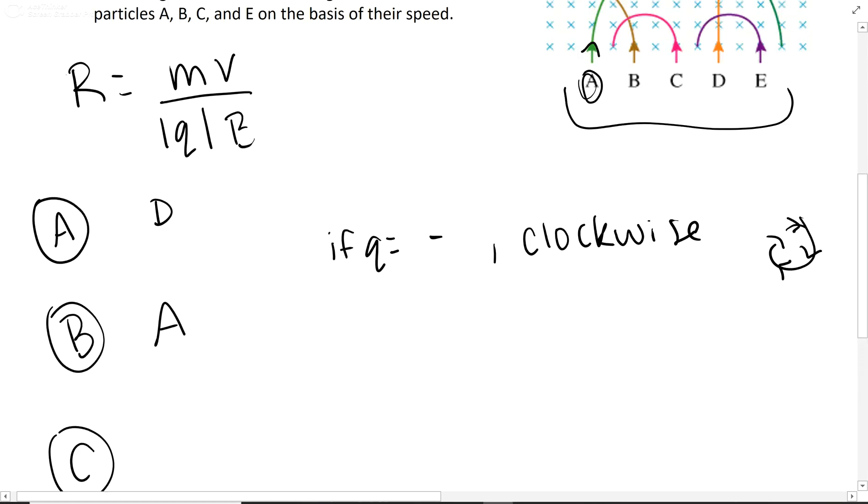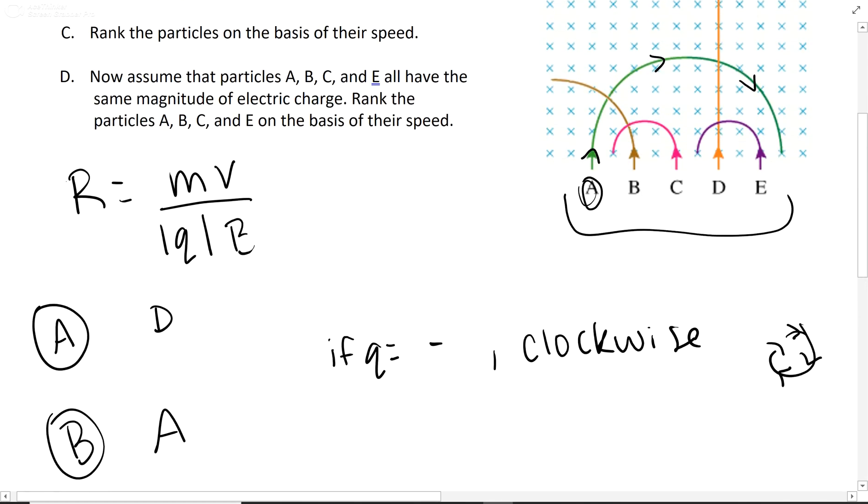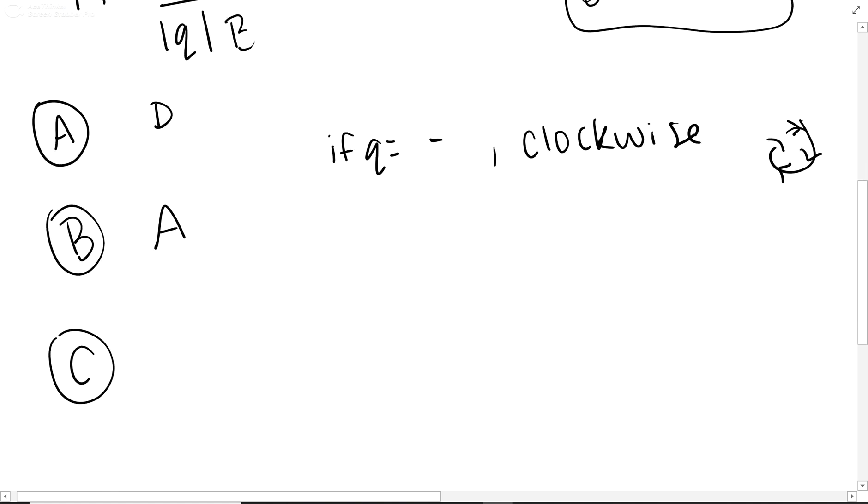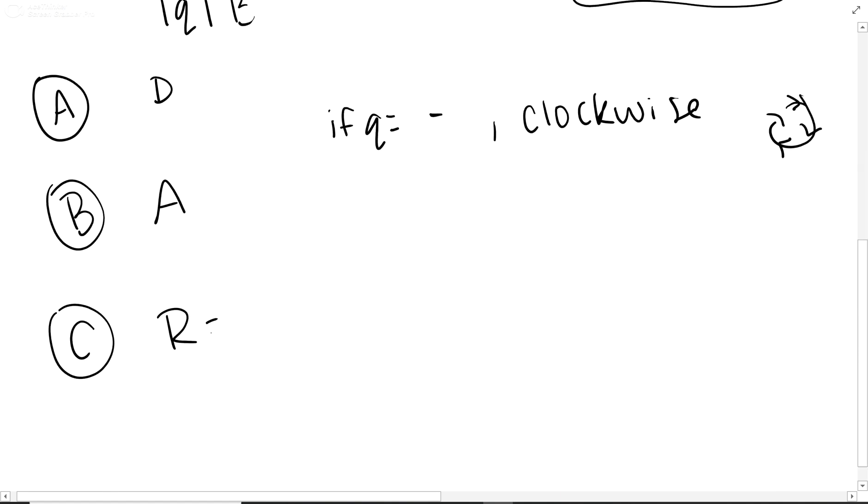Now let's look at C. C is asking us to rank them on the basis of their speeds. So we know that radius equals mass times velocity over absolute value of charge times B. So right off the bat, you can see that there's a direct relationship between velocity and radius.